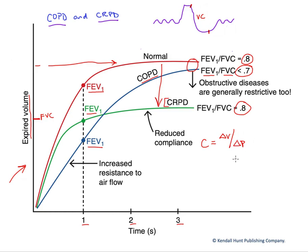When we have an obstructive disease such as emphysema — the COPD — often we get dueling effects where obstructive diseases are generally restrictive as well over time. Initially, it might only be affecting the ratio of FEV1 over FVC, but over time we also see that it becomes restrictive as well, and our compliance will fall. Thank you.